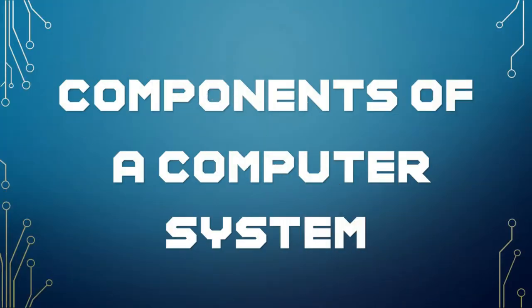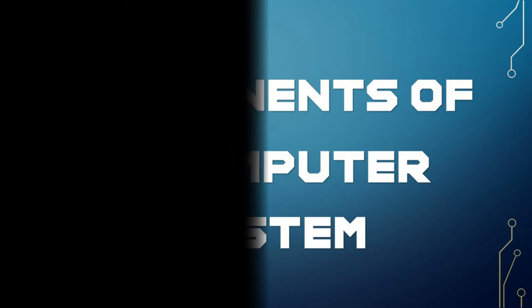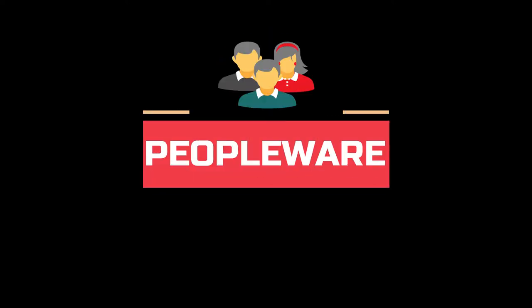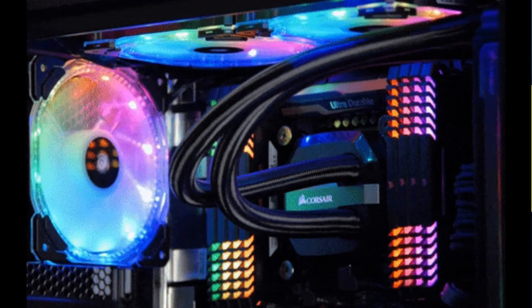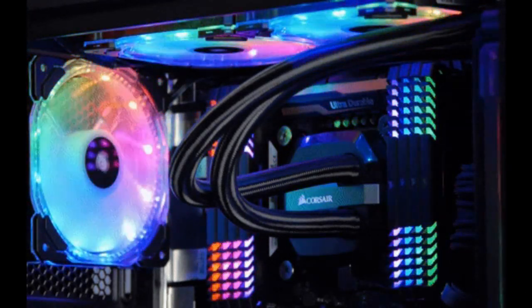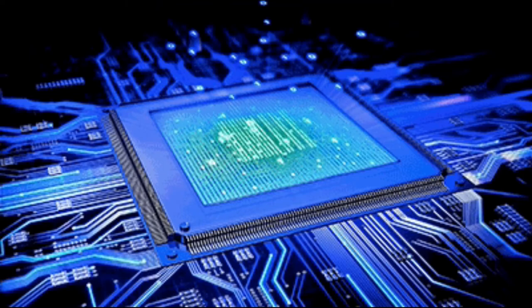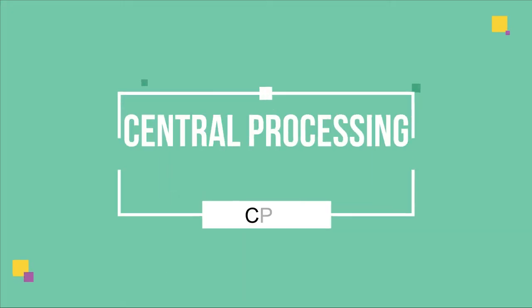On this part, we are going to discuss the components of a computer system. A computer system has three major components: hardware, software, and peopleware. Hardware is the physical and tangible part of a computer. All parts of a computer that you can touch are called hardware, and include the mechanical, electronic, and peripheral parts which we insert or plug into a computer. The hardware components of a computer system have four main parts: input devices, output devices, storage devices, and the CPU.